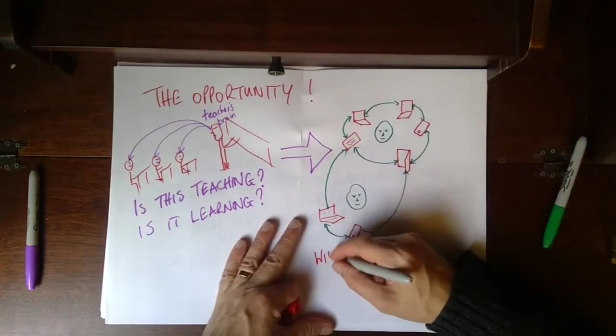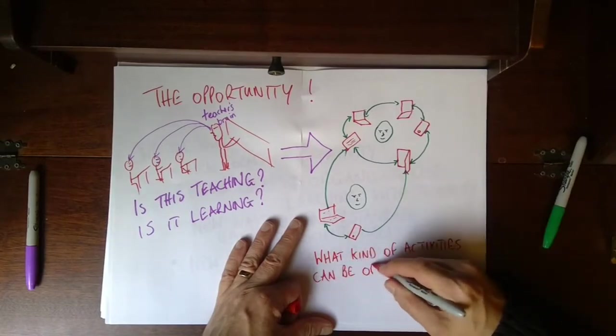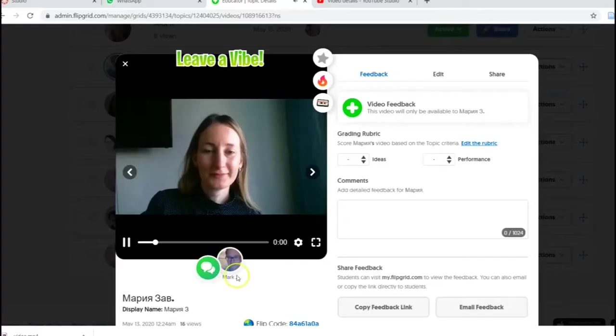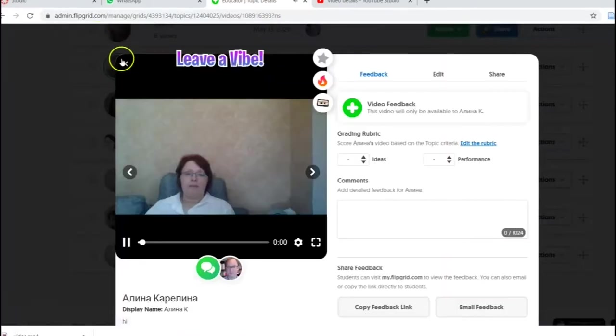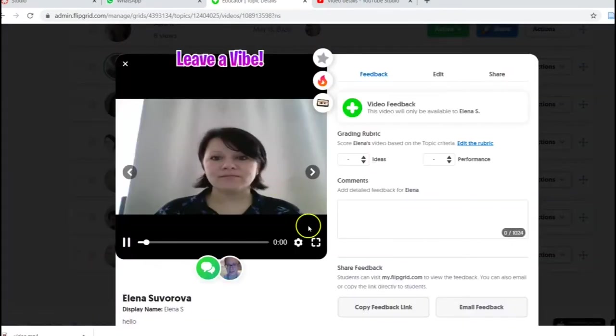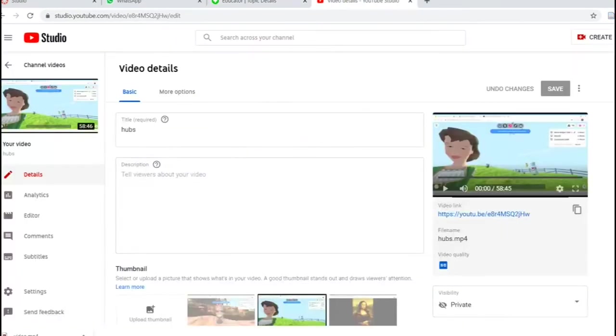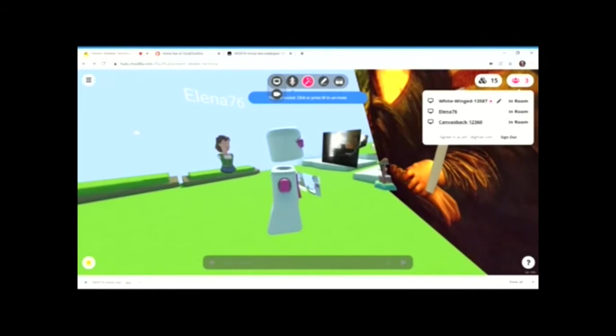So, we can ask what kind of activities can be organised with technology. Here are some examples of innovative activities. This is Flipgrid, which we're going to use on the course, and Mozilla Hubs, which is a 3D virtual world.